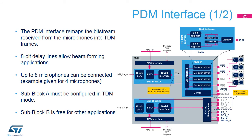The PDM interface remaps the bitstream received from the digital microphones into TDM frames. The PDM interface waits for the reception of 8 bits from each microphone before sending a new TDM frame. In addition, the PDM interface offers an 8-bit delay line for each microphone stream. These delay lines work with the resolution of the bitstream clock provided to the microphones. It enables beamforming applications and removes constraints on microphone placements. When the PDM interface is enabled, the serial interface of sub-block A cannot be used to connect an external device. This serial interface is connected internally to the PDM interface, and sub-block A must be configured in TDM mode as an RX master.